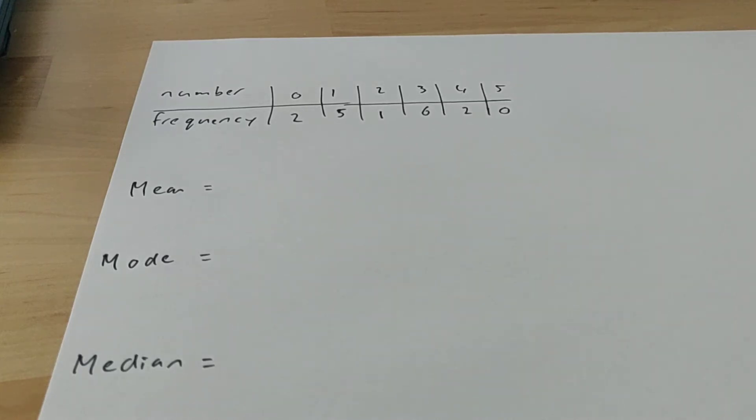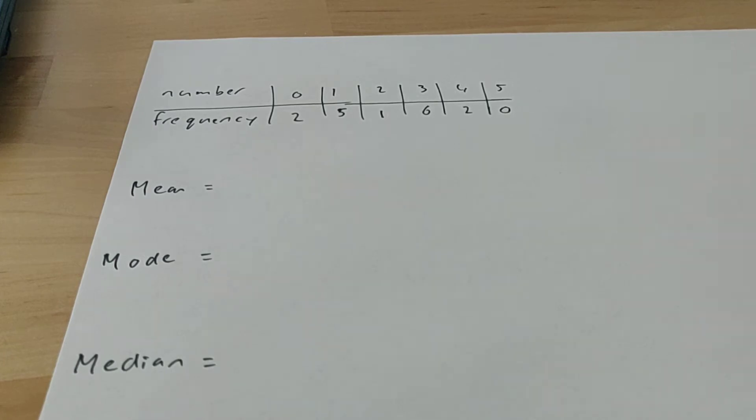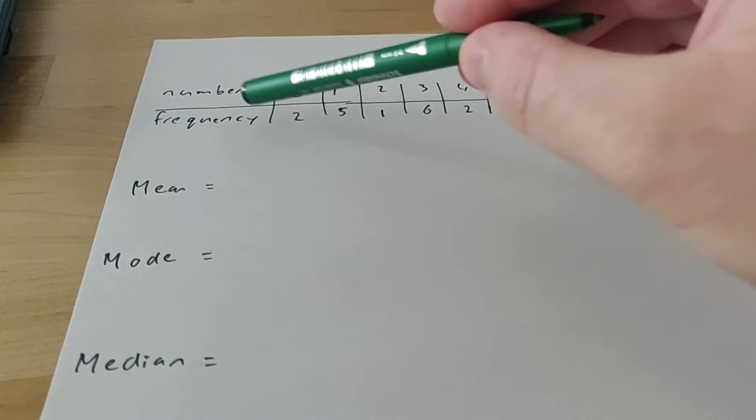Alright, here's a video for 3VT. I'd like to explain a couple of things that you learned last year that you'll need for chapter 9. Here I wrote down a frequency table which has a few numbers, and here it says a frequency.